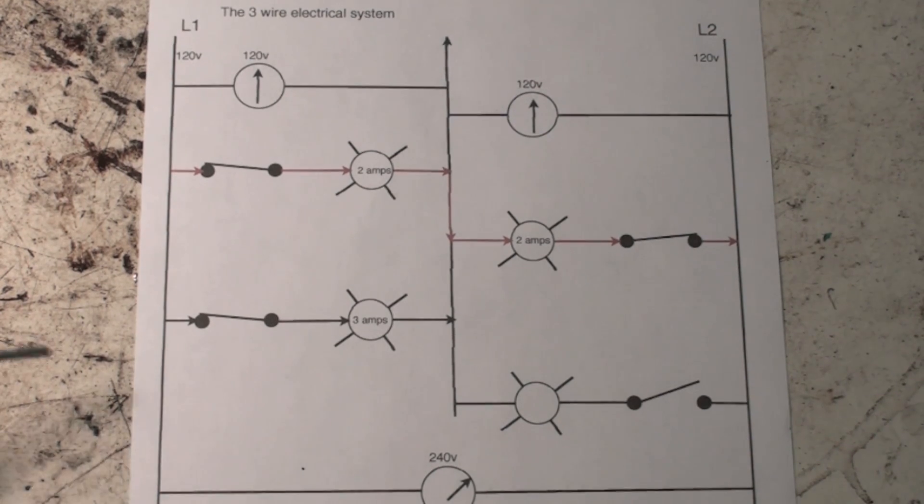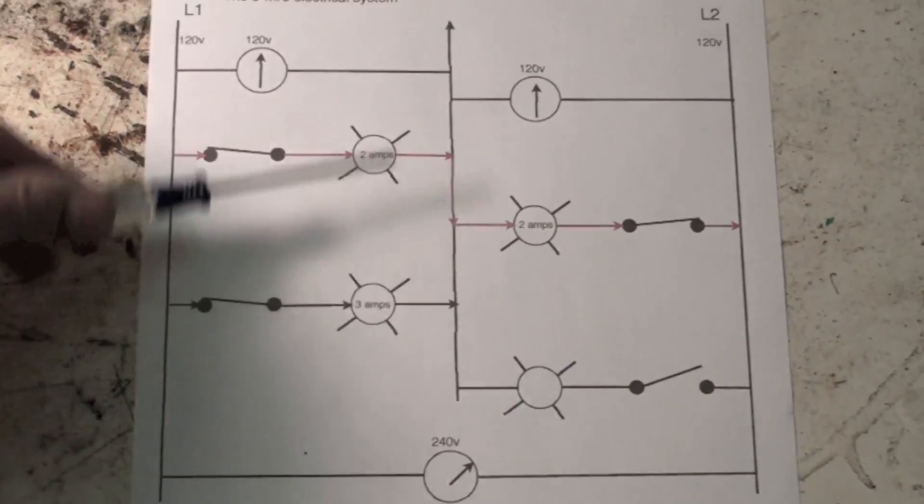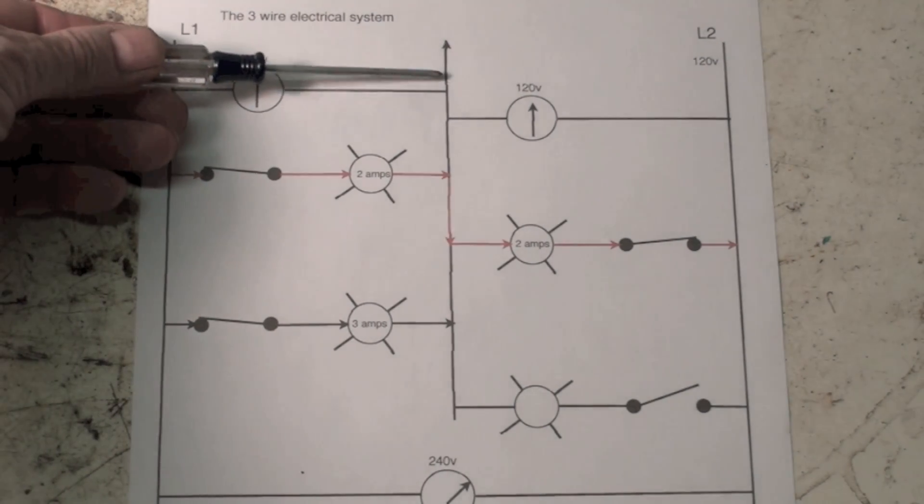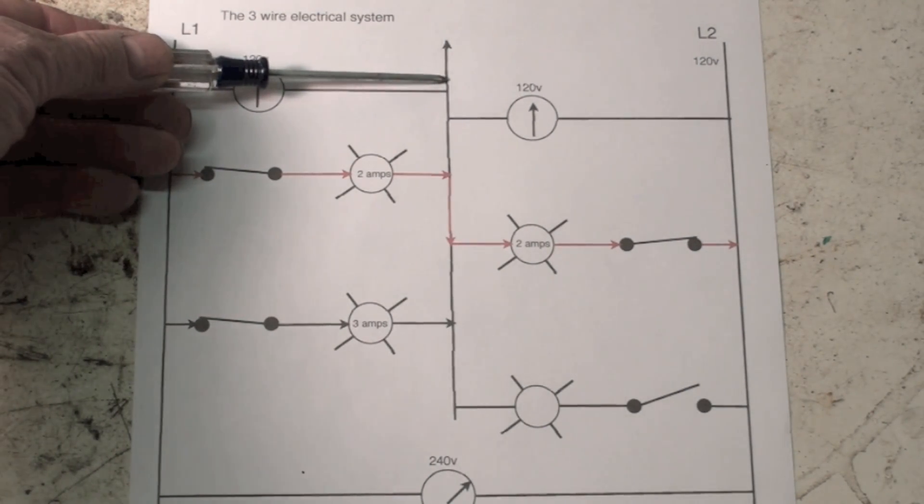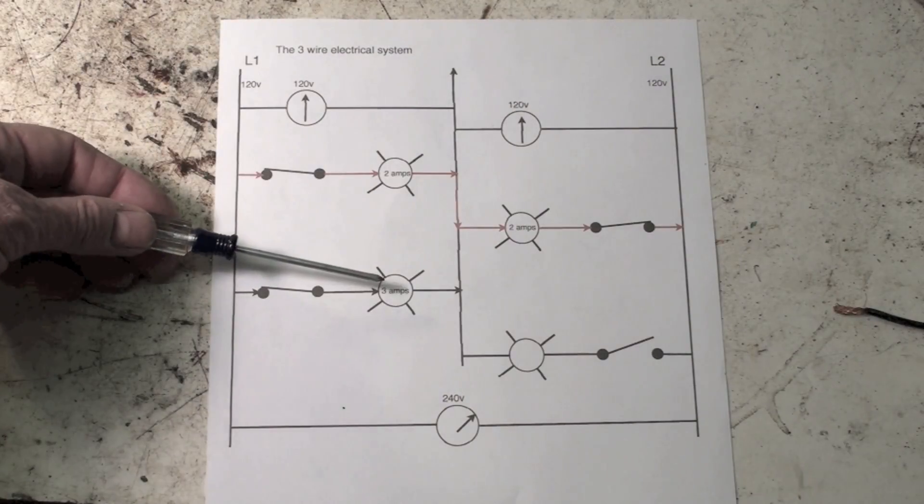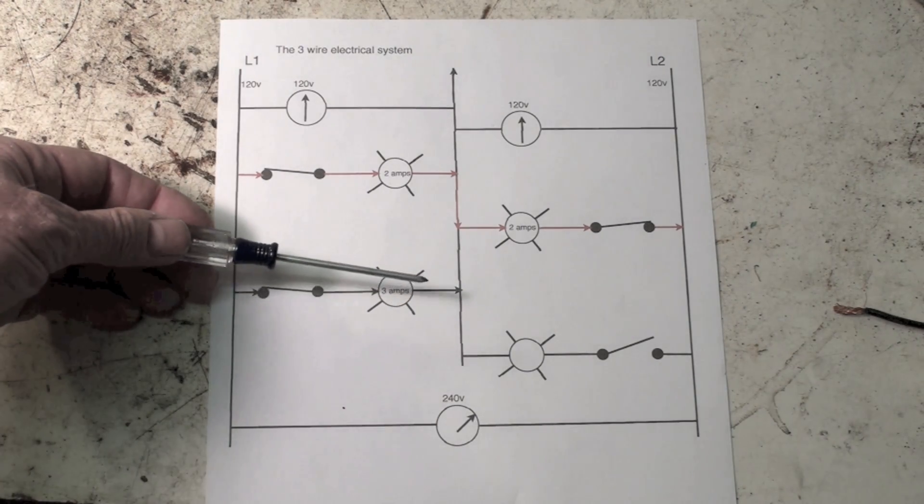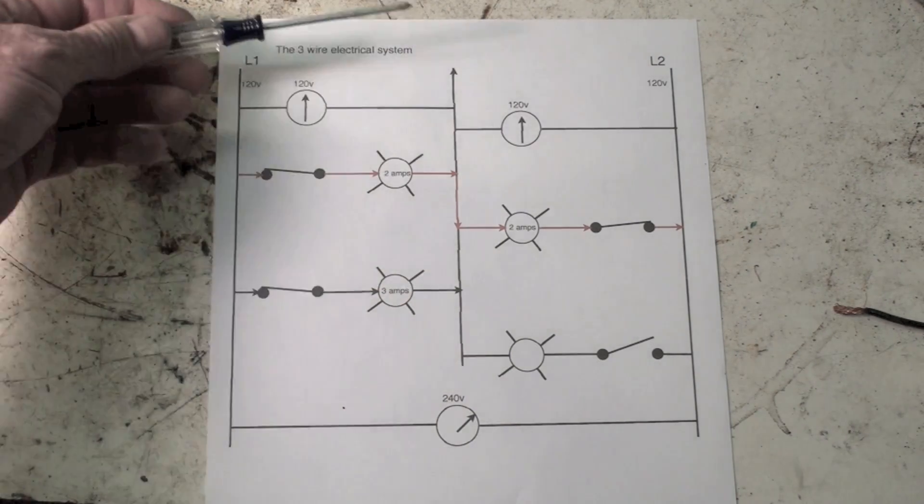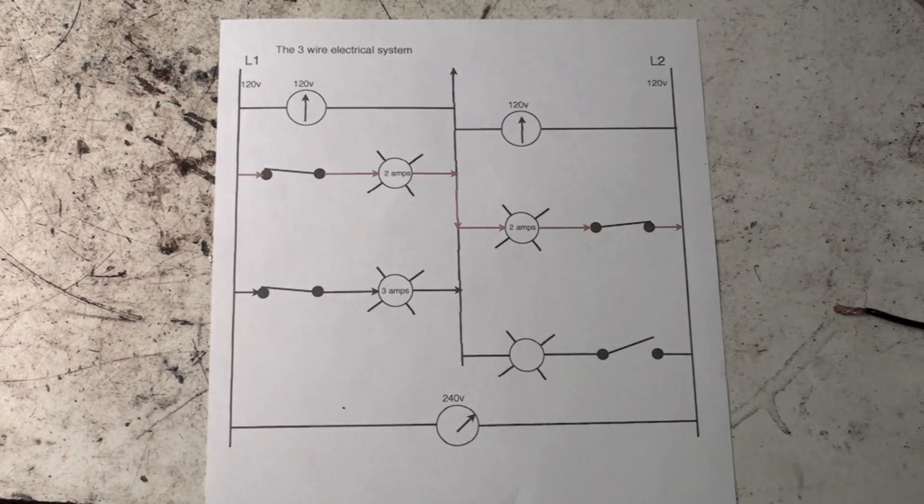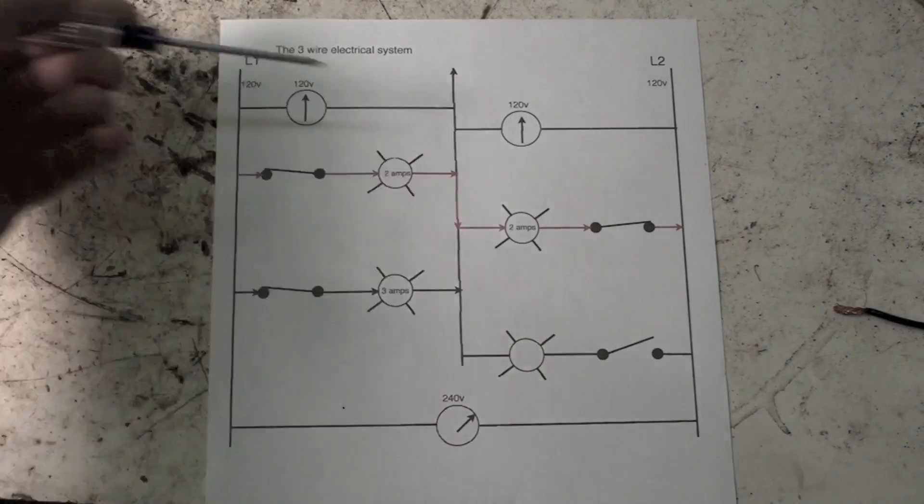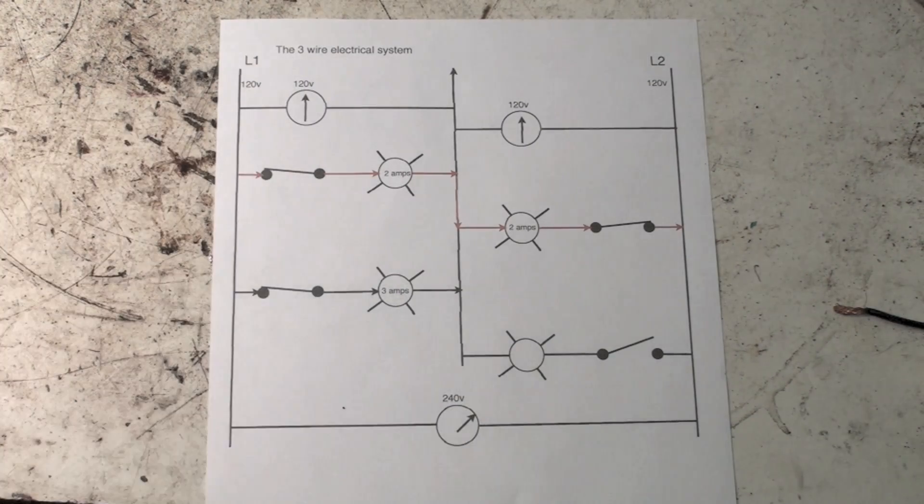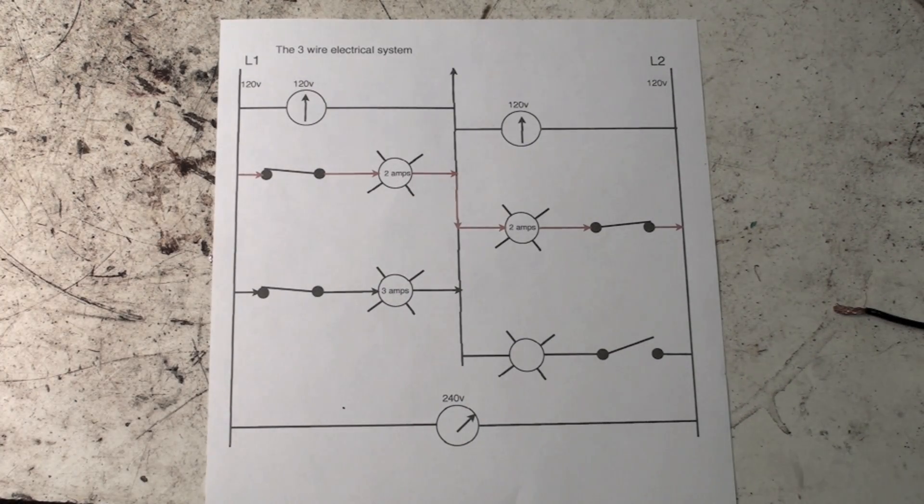What happened to the other 3 amps? It went through the neutral. So it's an unbalanced load. If I clamp the neutral here, I will read 3 amps because that's what the imbalance is—it's not being balanced in the panel, so it's being balanced exterior. This neutral will never carry as much load as L1 and L2 do. It will carry only the load that is not balanced in this system. That's how the three-wire electrical system works.